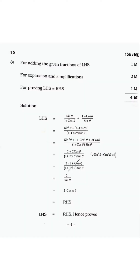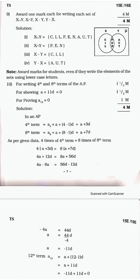For Question 8: for adding the given fractions of LHS you will get one mark. For expansion and simplification you will get two marks. For proving LHS equals RHS you will get one mark. So one mark for adding, two marks for expanding and simplifying, and one mark for completing the proof — totaling four marks for this question.